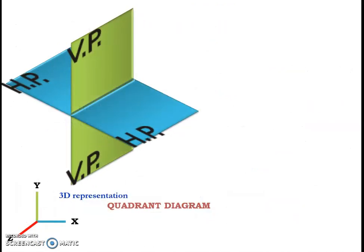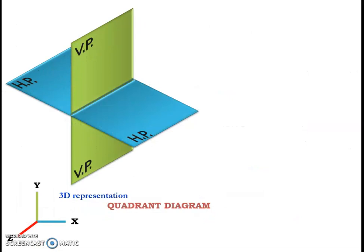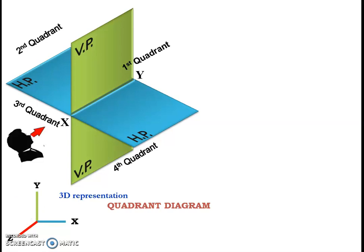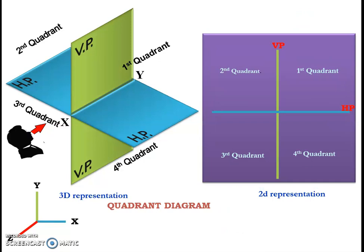Now let us consider the 3D representation of the quadrant diagram. It has got both horizontal and vertical planes. When we view this 3D representation diagram from the z-axis direction, it will become a 2D representation diagram with four quadrants.